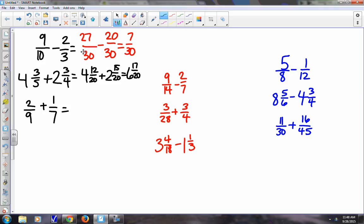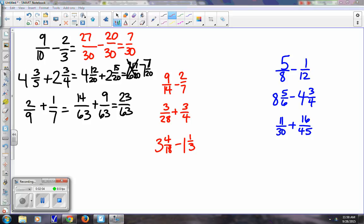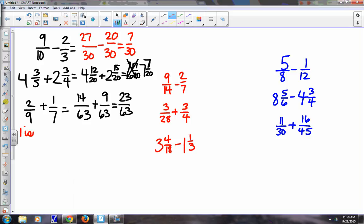Here it would be 4 and 12 20ths plus 2 and 15 20ths, which equals 6 and 17 20ths. And here would be 63, right? So 63, 14 63rds plus 9 63rds equals 23 63rds.